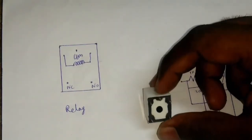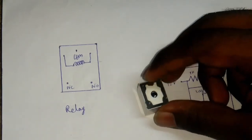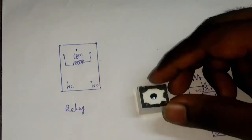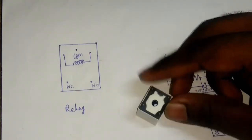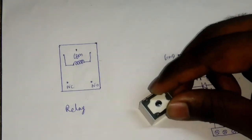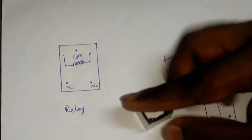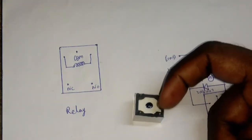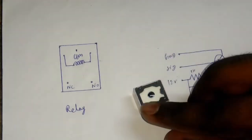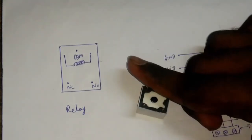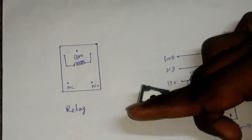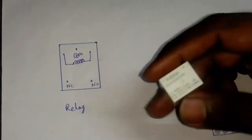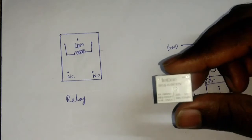The relay has 5 pins and the center is the common. The common connects internally — this is the normally closed pin. If you look at the two pins, we have a winding. This is the pin that creates a magnetic field, which is the power of the relay pins. When activated, this pin closes the circuit — this is how the relay input works.